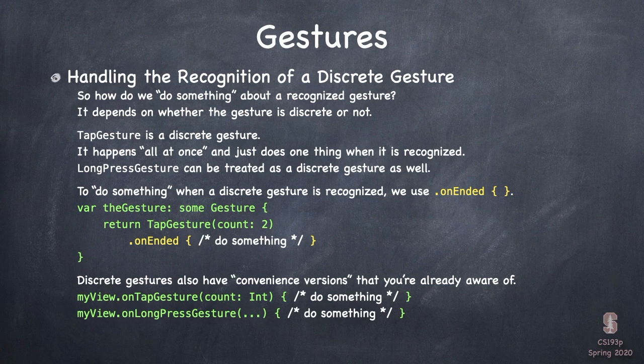Discrete gestures are so simple that they have nice convenience functions. You've seen it on TapGesture — you just do `.onTapGesture` directly on a view. I don't know if you noticed it also takes the argument `count`, which defaults to one. That's exactly the same as what we've seen — we're just going to handle a TapGesture. Discrete gestures are easy.